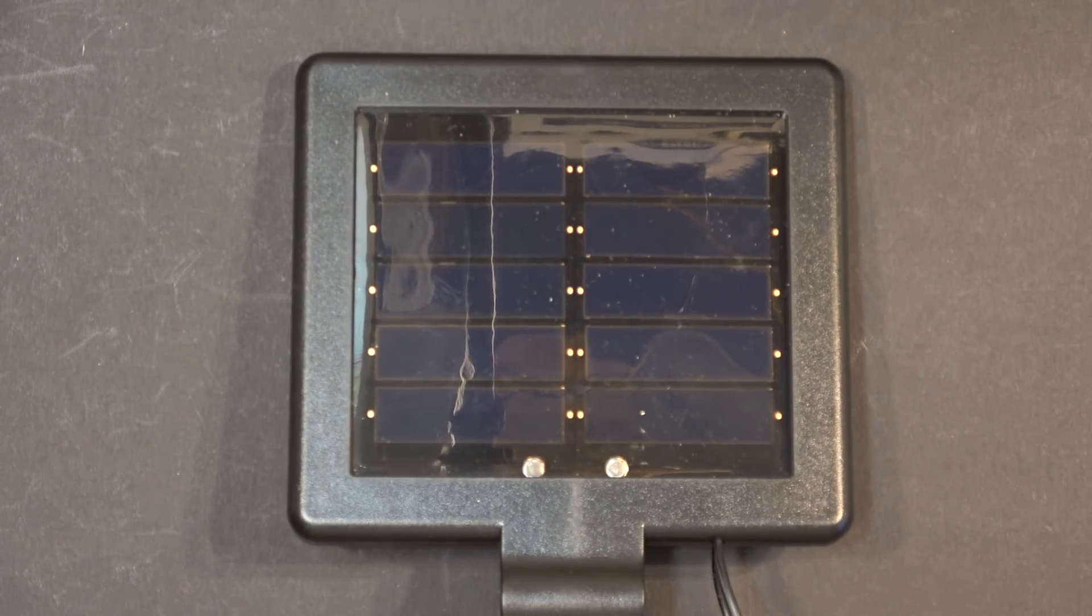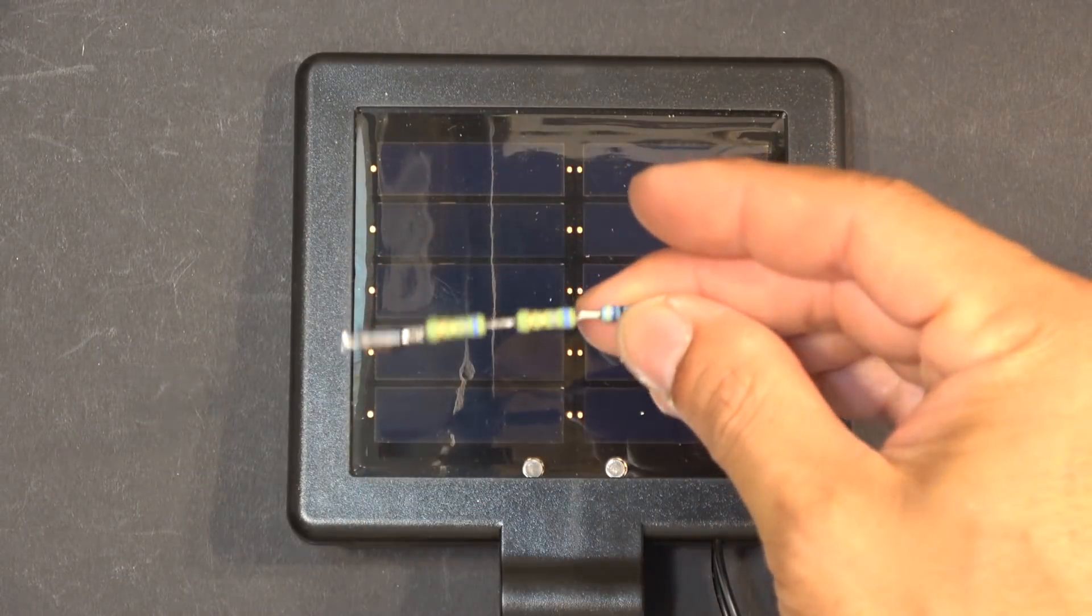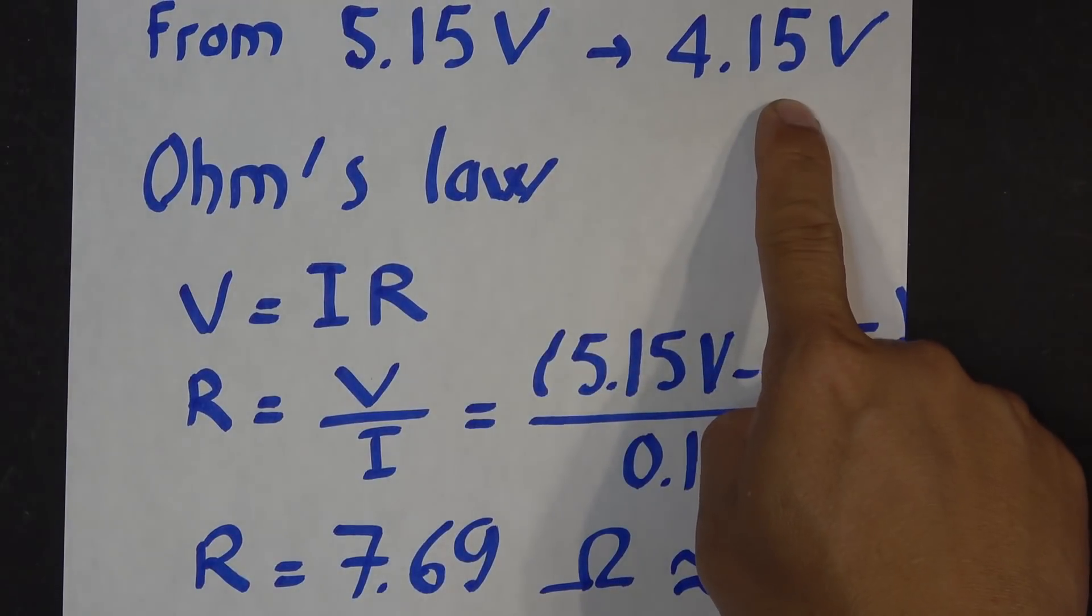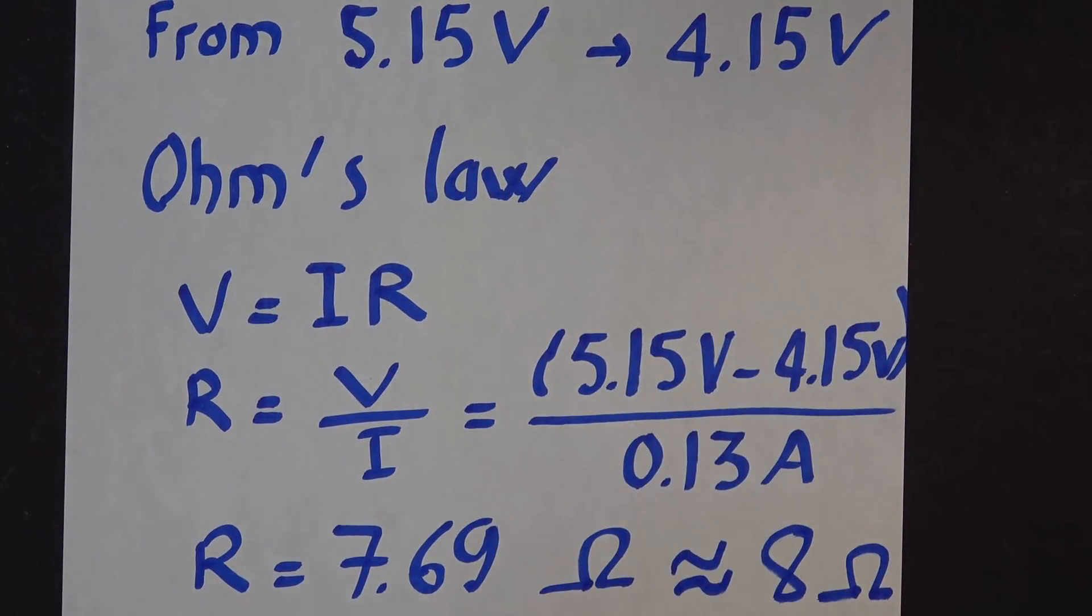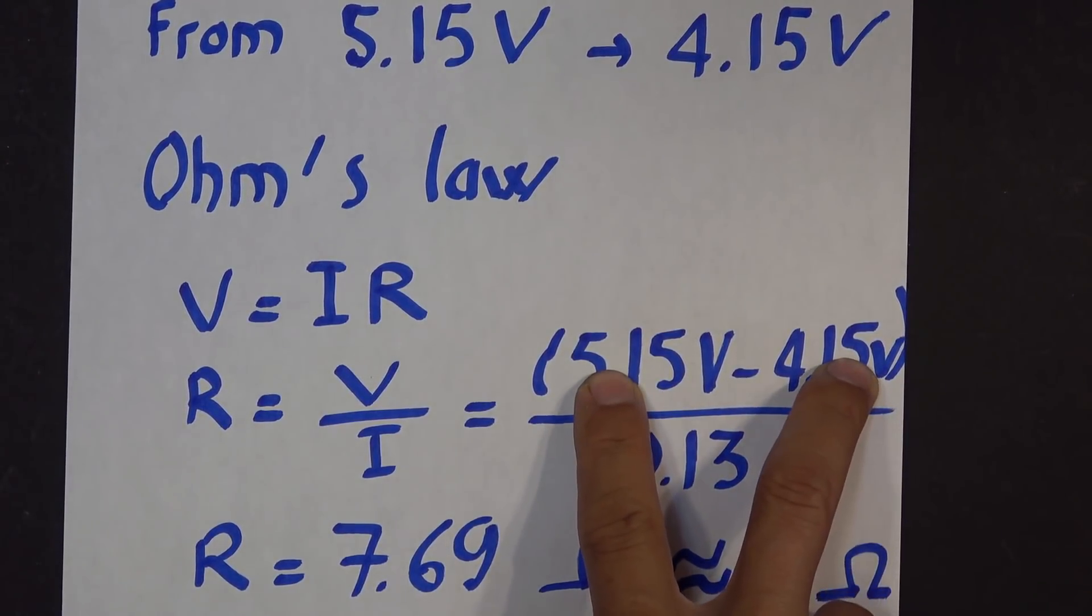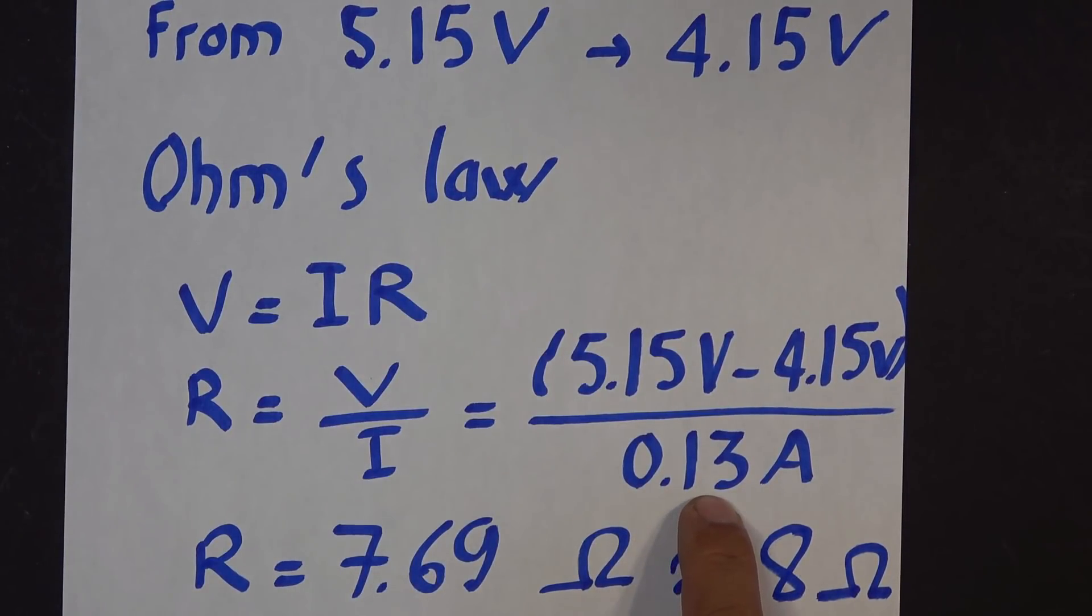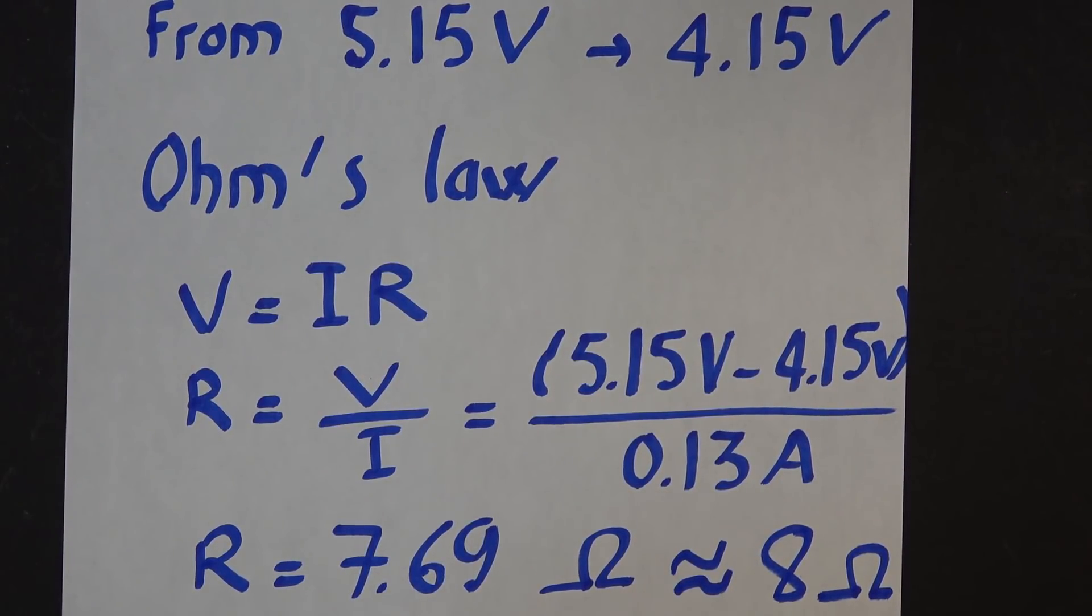Here's the calculation. We want to reduce voltage from 5.15V to 4.15V, which is one volt. Using Ohm's law, R equals V over I, so V is the difference between the two voltages, I is the short circuit current of the solar panel. We get R is 7.69 ohm or about 8 ohm. That is the resistor we're going to use.